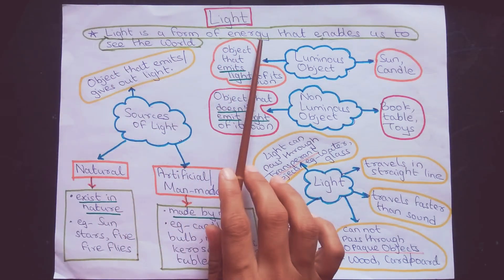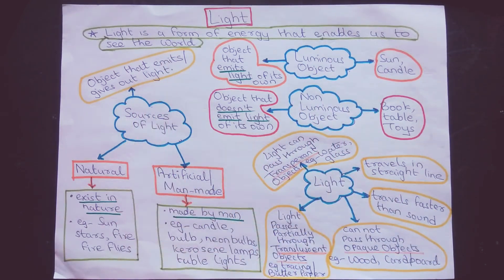Light is a form of energy that enables us to see the world. Because of light, we can see what is around us.